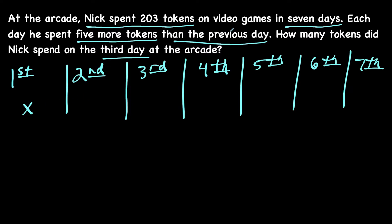On the second day, he uses five more than the previous day, so five more than x would be x plus five. The idea for the next part is five more than x plus five would be x plus five plus five, which would be x plus 10. We could use this information to fill out the rest of the table.